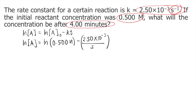Since our time is in minutes and our rate constant is in seconds to the negative 1, we need to convert our time first to seconds. So 4 minutes — multiply 4 by 60, since there are 60 seconds in 1 minute — gives us 240 seconds.